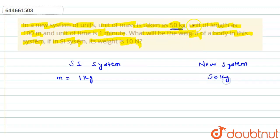For length, we generally take 1 meter as the SI unit for the SI system, but in this new system, we have to take 100 meter as the new unit. And for time, we have 1 second, but in this system, we have to take 1 minute.